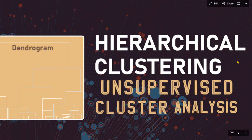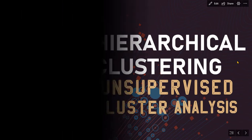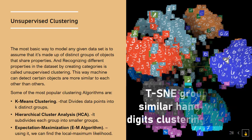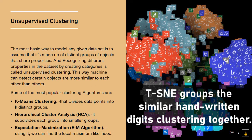This way, a machine can detect that certain objects are more similar to each other than others. As discussed in machine learning fundamentals, unsupervised clustering finds similarities between objects, and a clustering algorithm can group distinct objects that share properties.